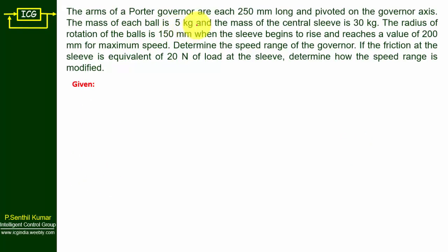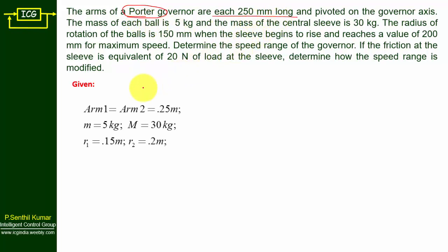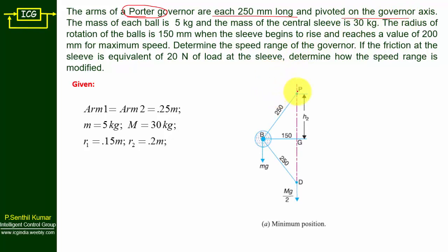The arms of the Porter governor are each 250 mm long — both upper and lower arms are equal, so that is 0.25 m. This is a Porter governor, not a Watt governor, so when you read the problem, read carefully and understand whether it is Porter or Watt. Both upper and lower arms are 0.25 m.